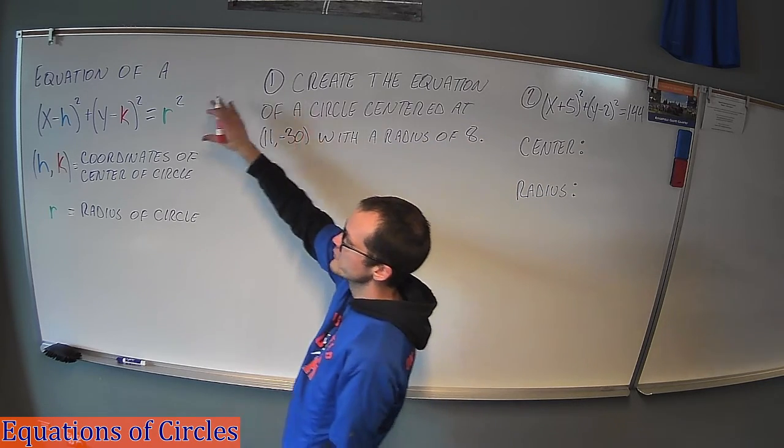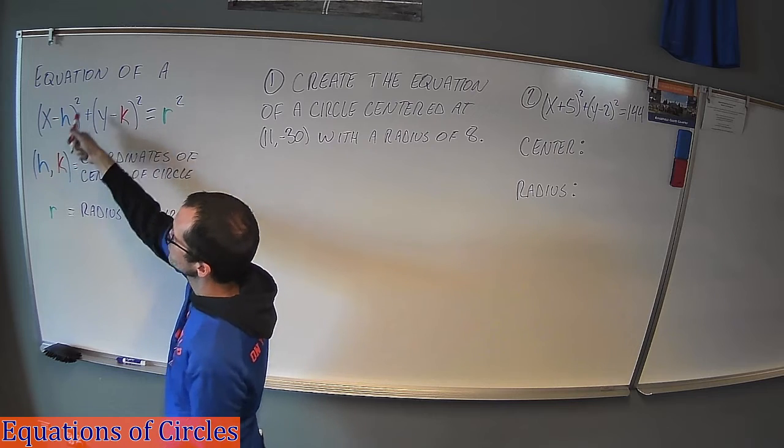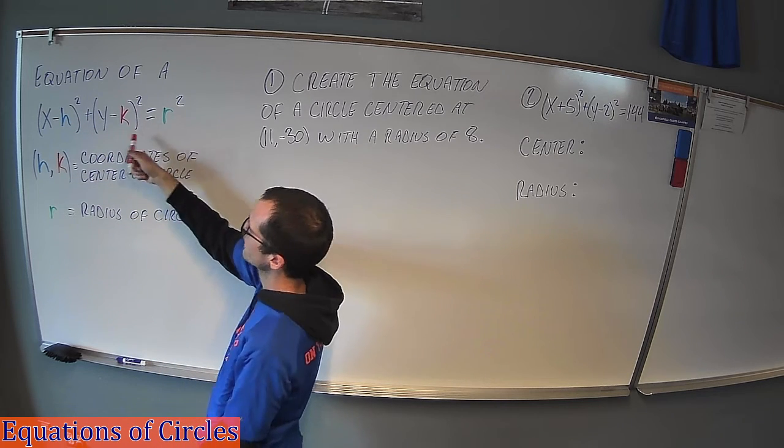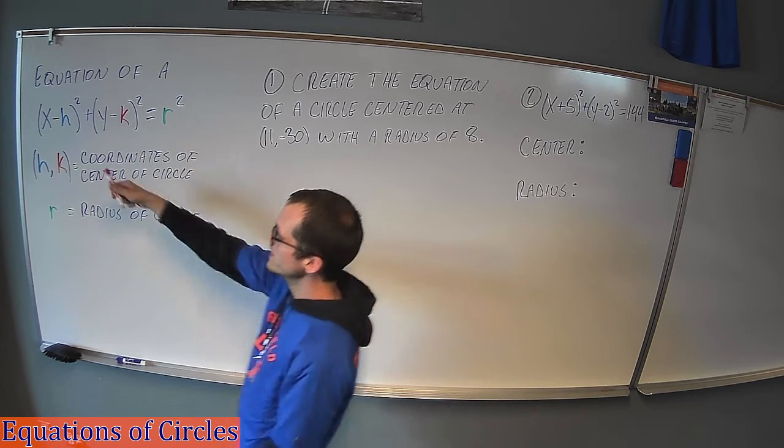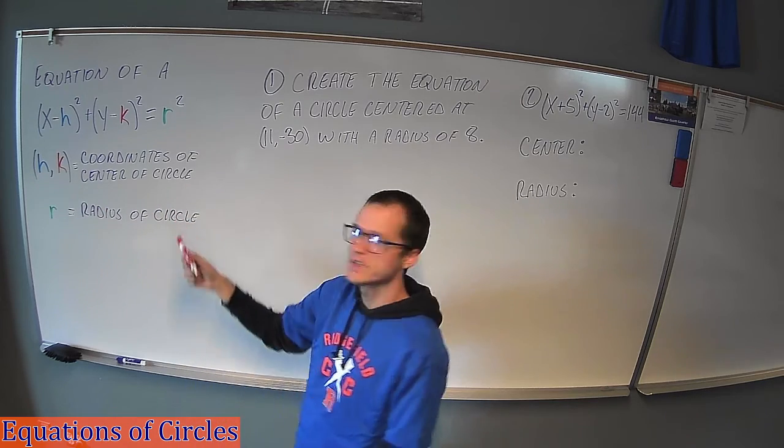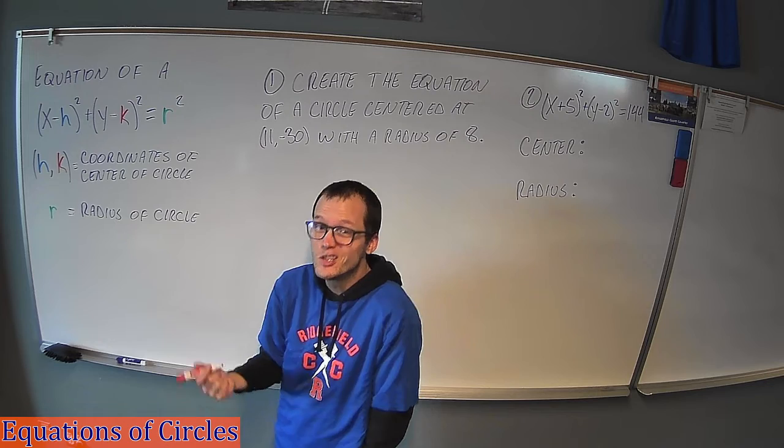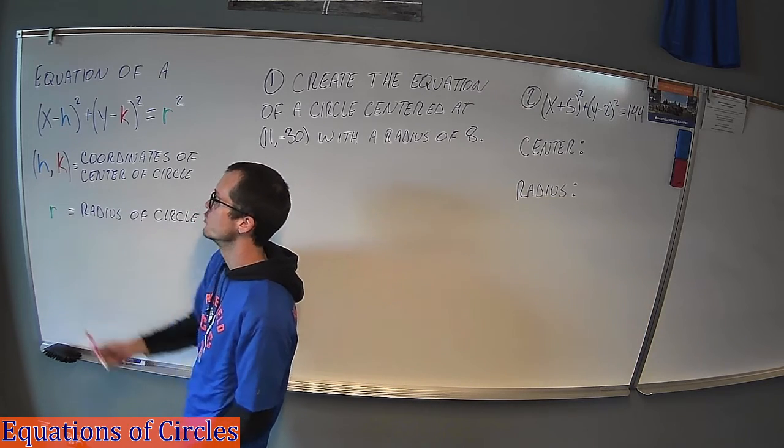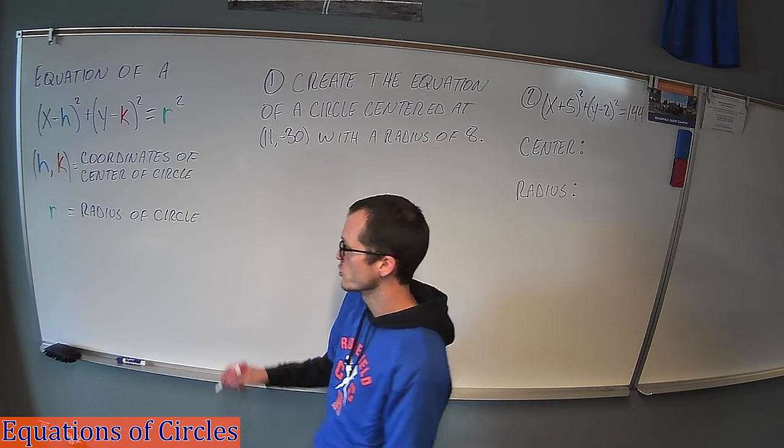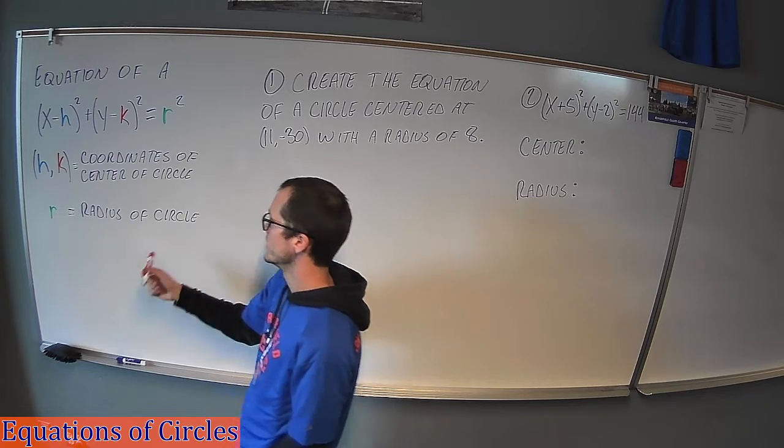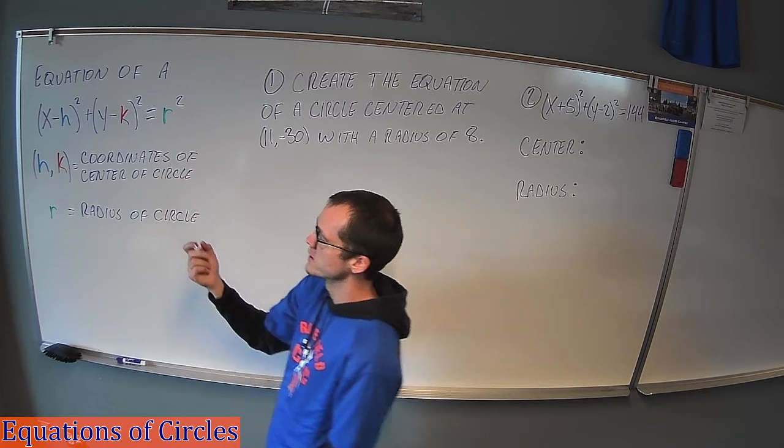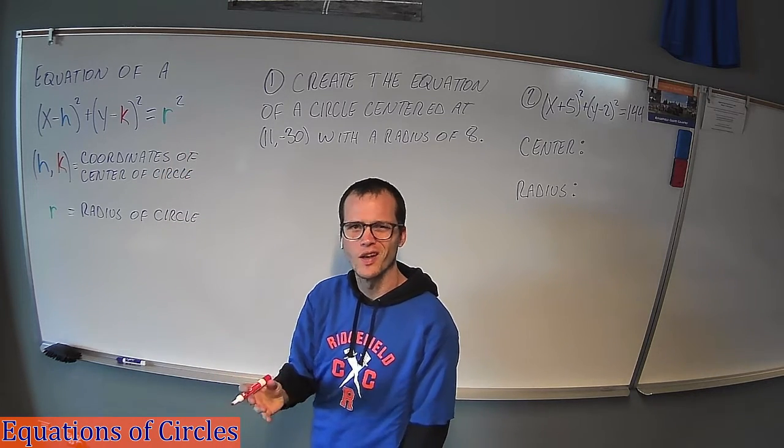So equations of circles are in this form: (x - h)² + (y - k)² = r². Where h and k, these are the coordinates of the center of your circle. So if your circle is centered at (1, 2), then h is 1 and k is 2. Pretty straightforward. We'll practice that here shortly. R is the radius. We're used to that. Notice that it's being squared so sometimes we have to play around with square roots and whatnot to figure out what the radius is.